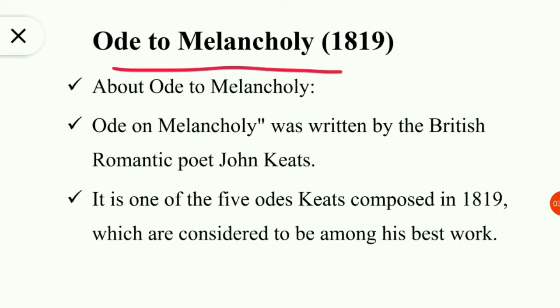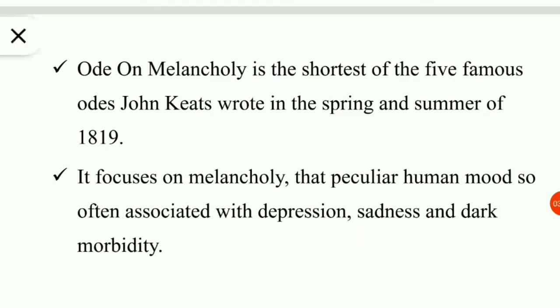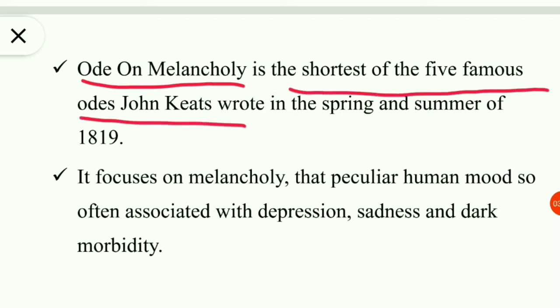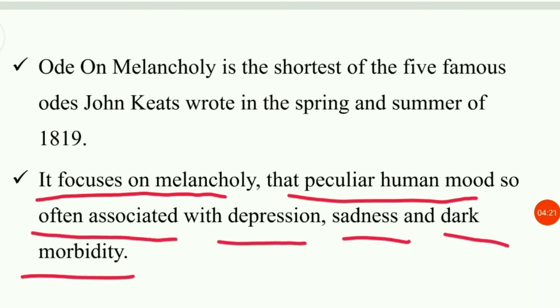Ode on Melancholy was published in the year 1819. It was written by the British romantic poet John Keats. It is one of the five odes composed in 1819 which are considered to be among his best works. Ode on Melancholy is the shortest of the five famous odes John Keats wrote in the spring and summer of 1819.